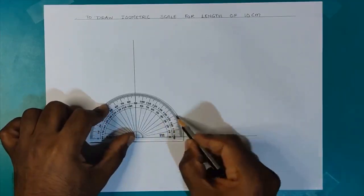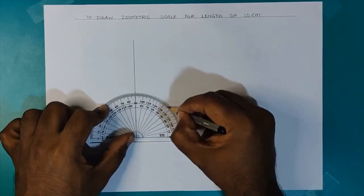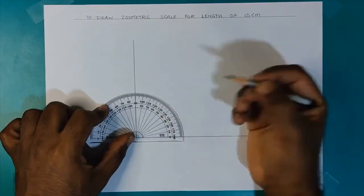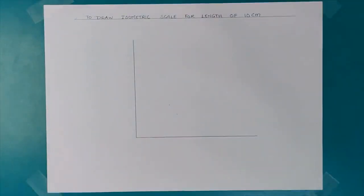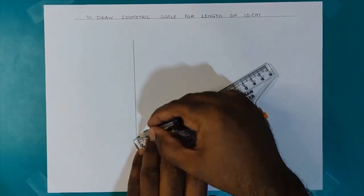Now I take angles of 30 degrees and 45 degrees and draw lines through these divisions I obtained through the protractor.